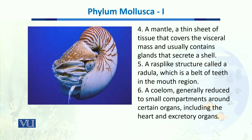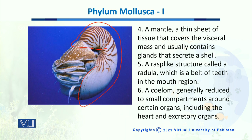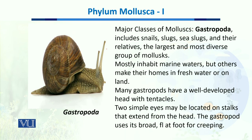The mantle is a thin sheet of tissue that covers the visceral mass and contains glands that secrete a shell, as you can see around this organism. The fifth structure is a rasp-like structure called the radula — a belt of teeth inside the mouth region which helps it to capture and engulf prey. The coelom is generally reduced to small compartments around certain organs, mainly the heart and excretory organs.